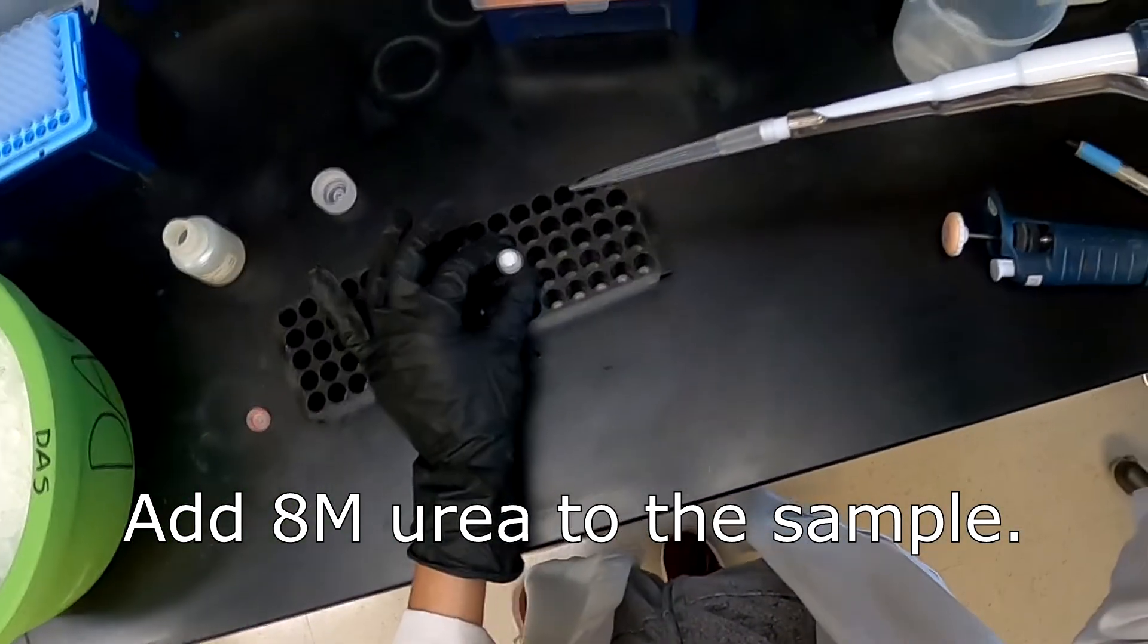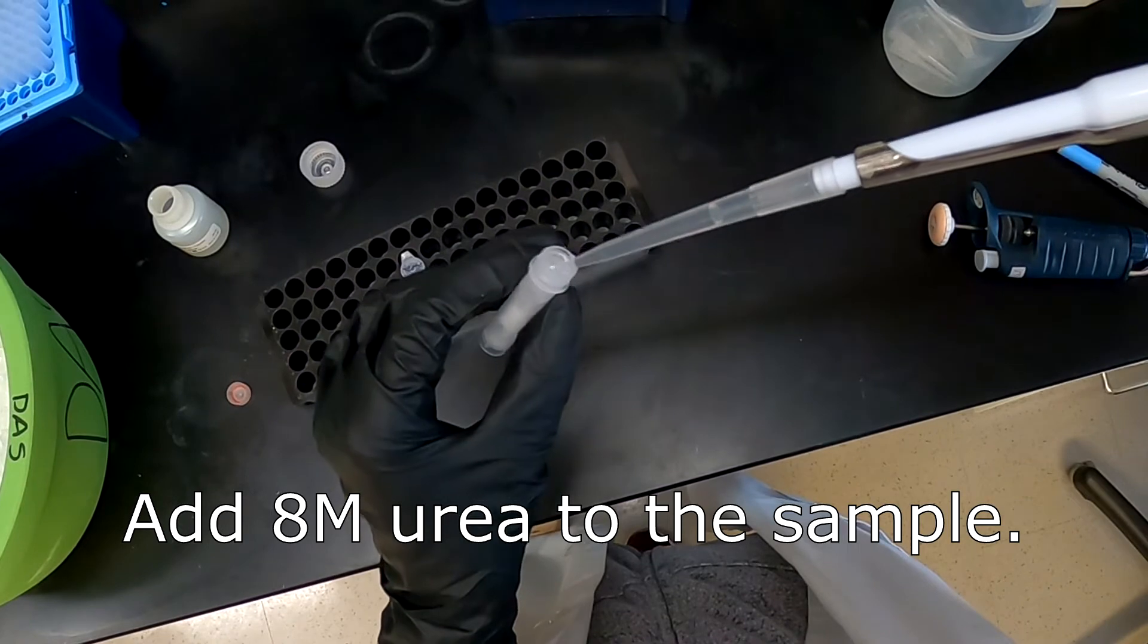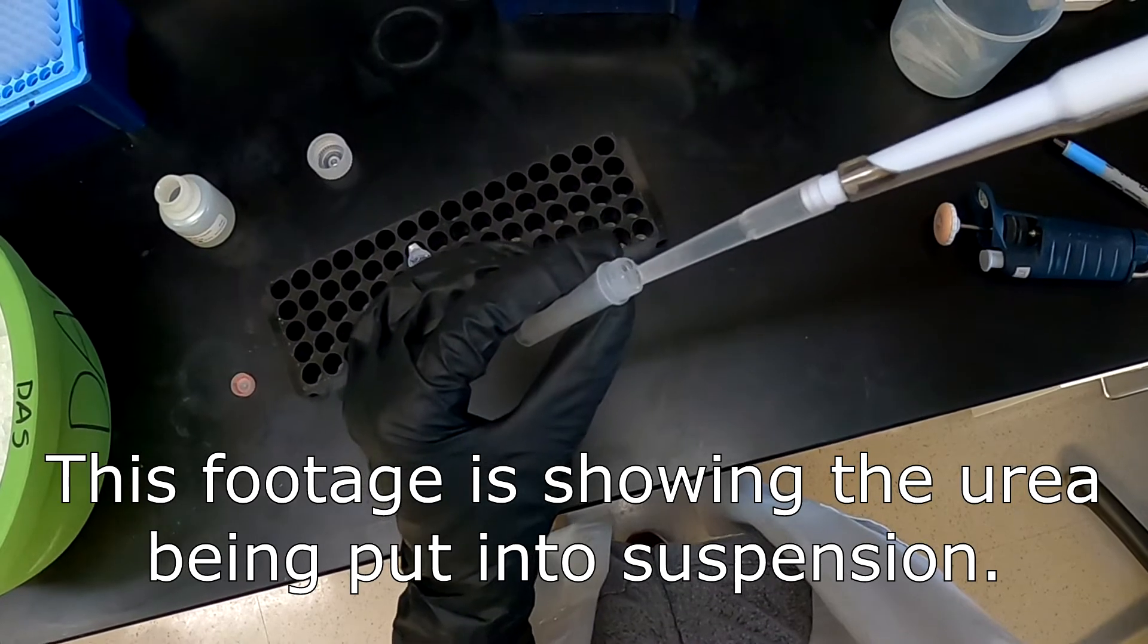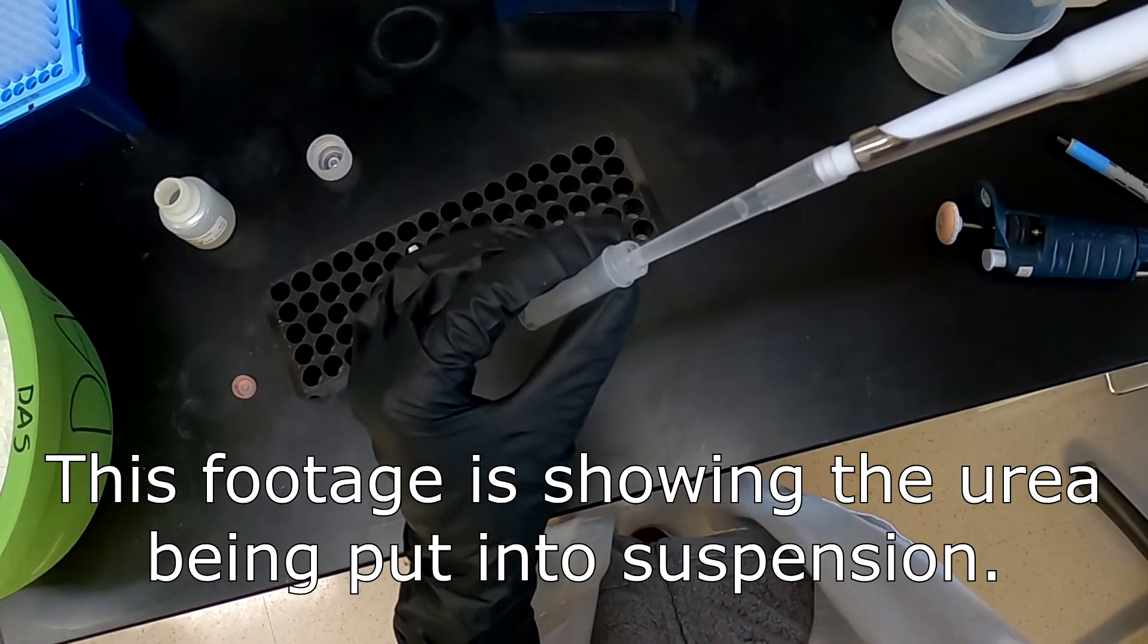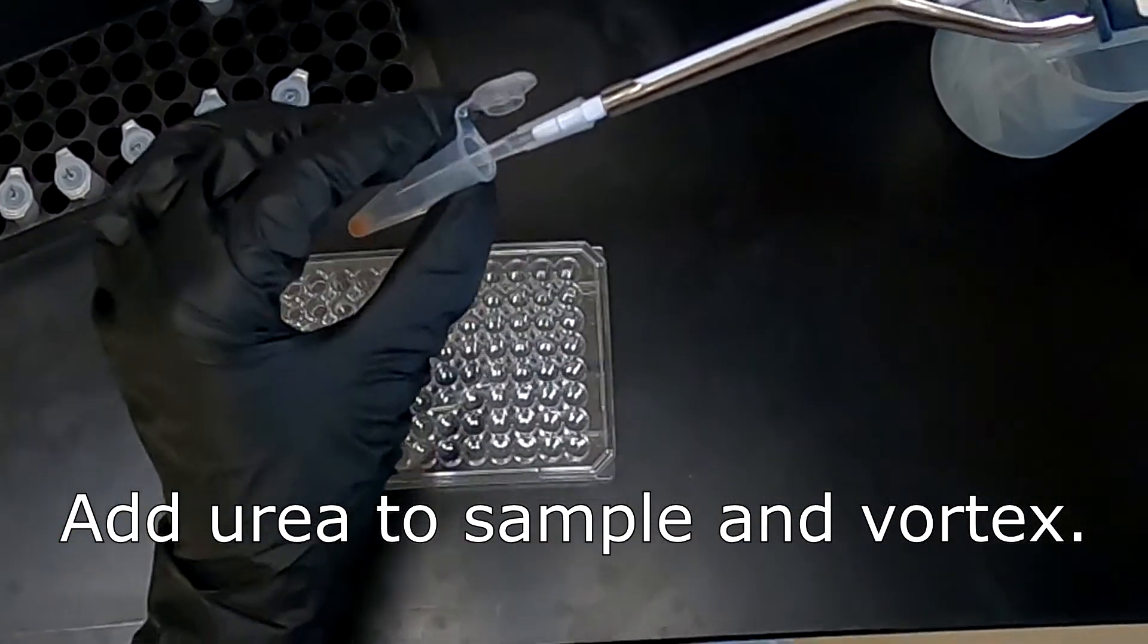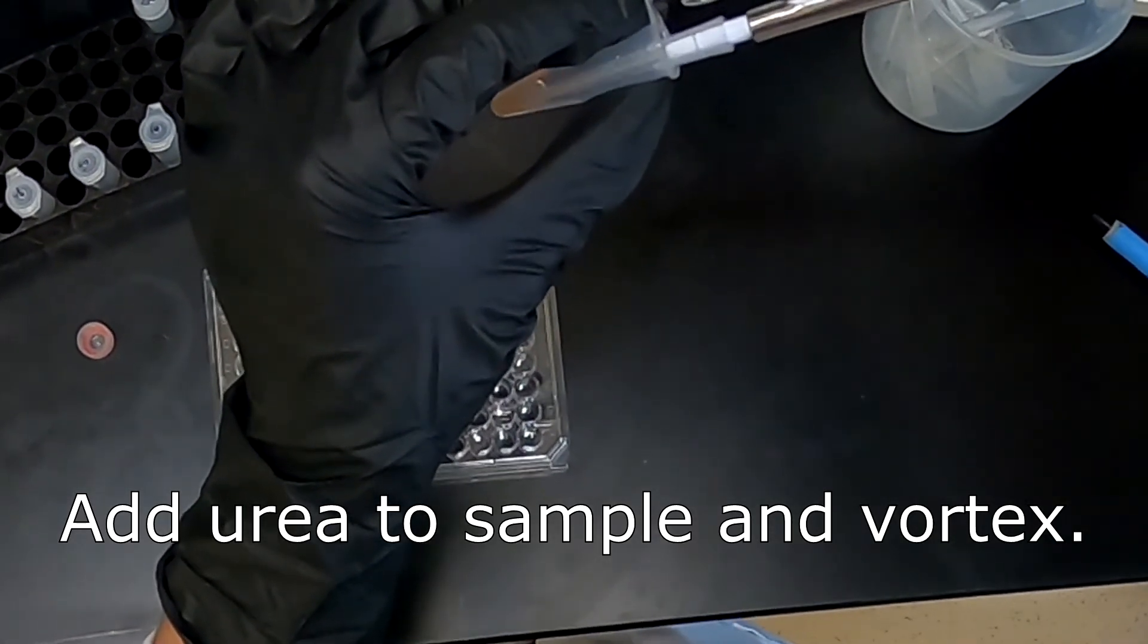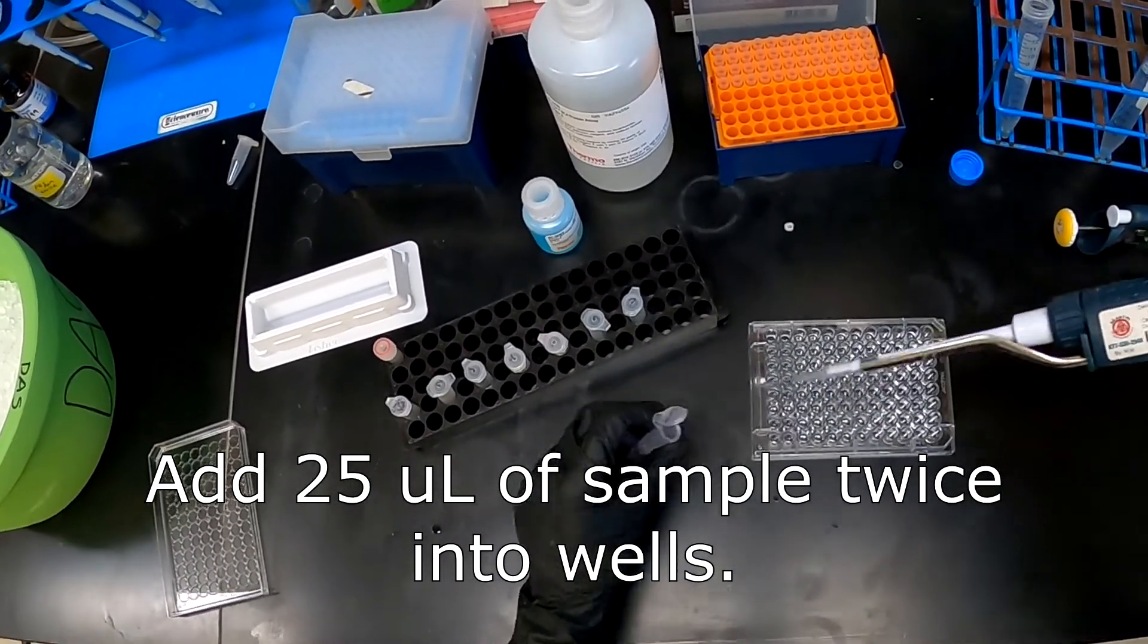The yeast sample from last class will be resuspended in 100 microliters of 8 molar urea. This will allow for the sample to be lysed in order for the internal proteins to be released. The sample was then vortexed for 2 minutes. After this, the sample was diluted 8 times using water. That way, the urea would not be at a high enough concentration to interfere with the BCA. After this, 25 microliters of the sample was then added to the plate.